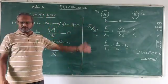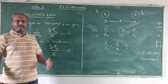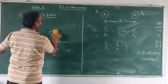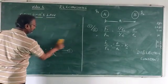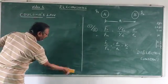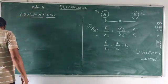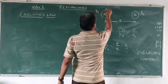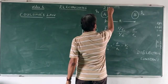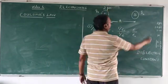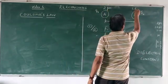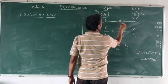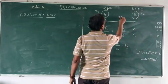With this concept, I need to do a numerical to make it more clear. Let me take a simple numerical. Let me take two charges. Let one charge be 2 micro coulomb. Let the other charge be 1.6 micro coulomb. Let us say they are separated by a distance of 3 centimeter.